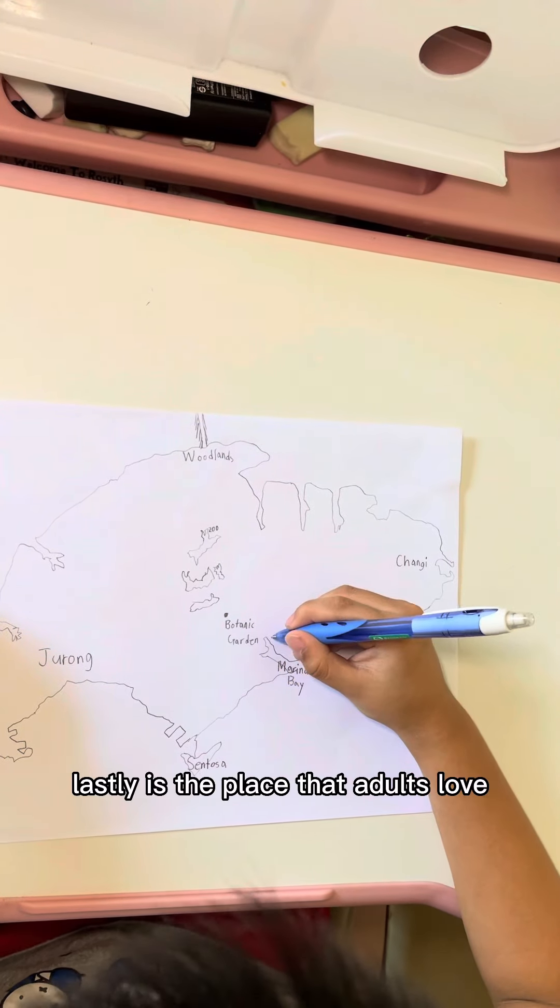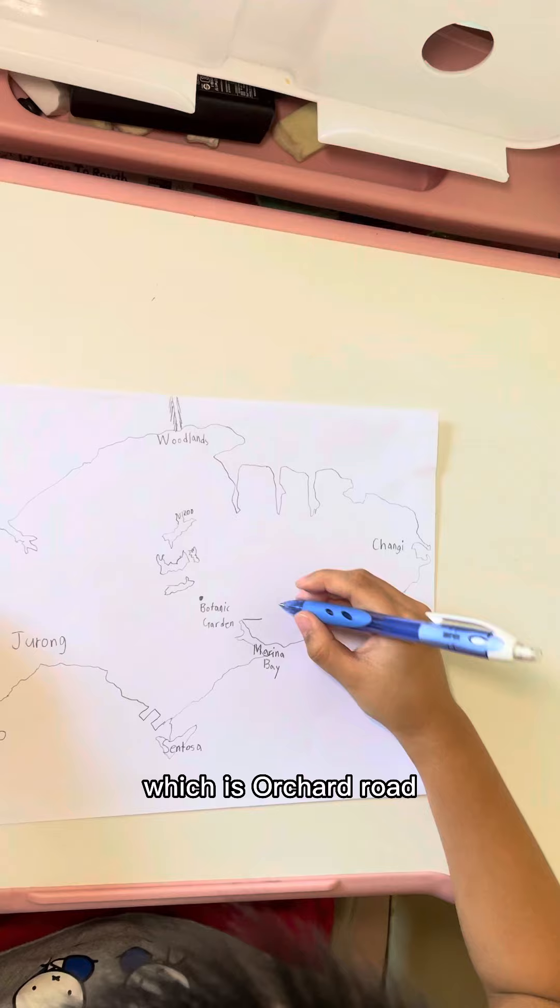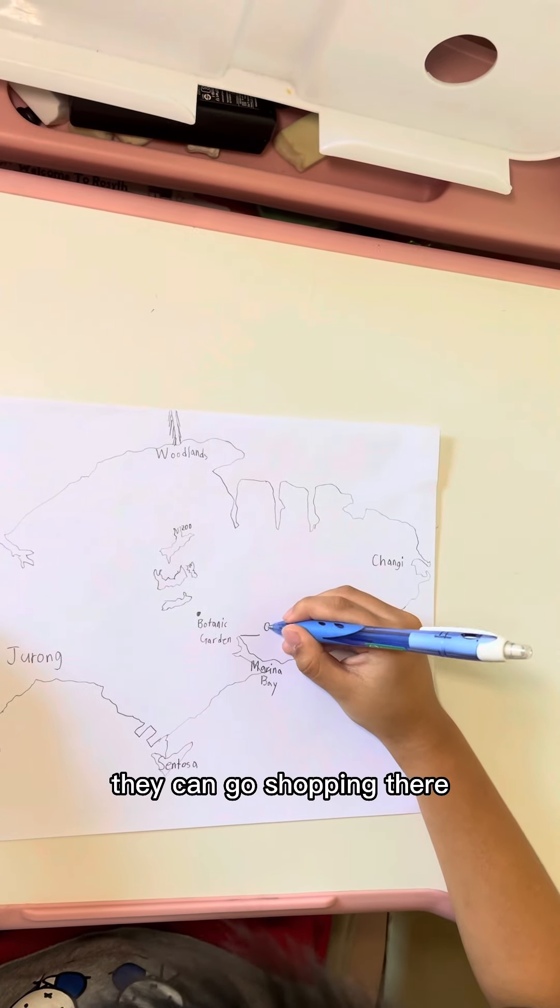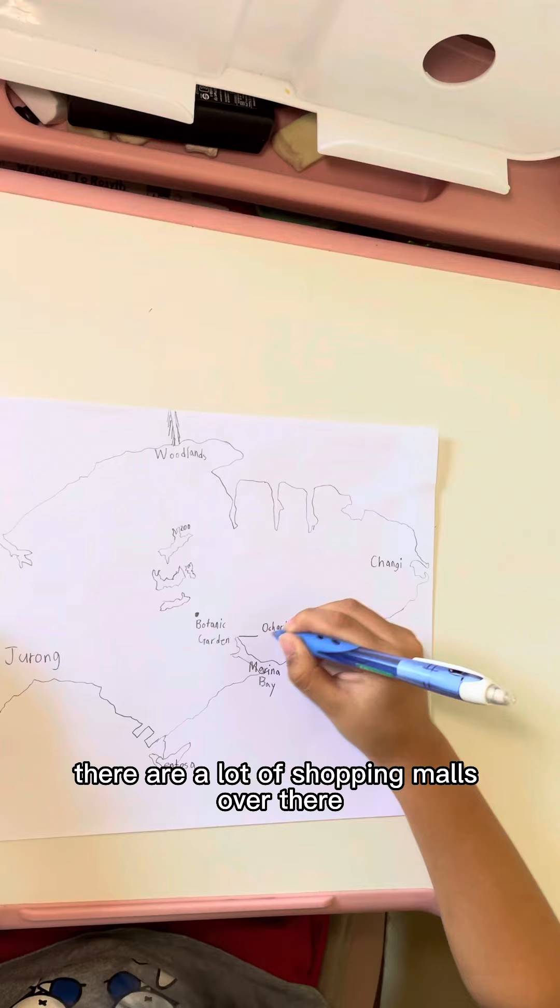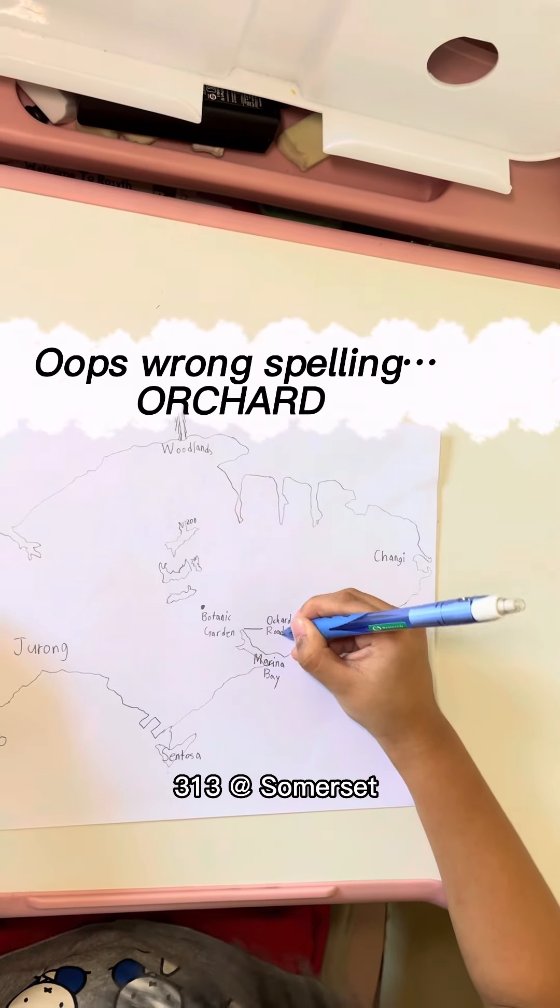Lastly is a place that adults love which is Orchard Road. They can go shopping there. There are a lot of shopping malls over there such as Ion Orchard and 312 at Somerset.